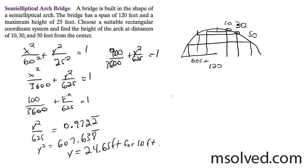We subtract 900 over 3600 from 1, which is 1 minus 1 fourth, so y squared over 625 is equal to 0.75. Multiply 625 by this, we get y squared is equal to 468.75, and then y is equal to 21.65 feet.